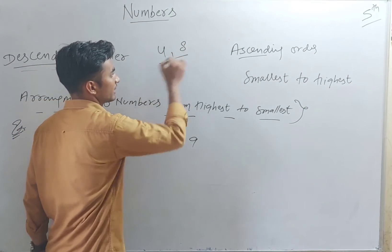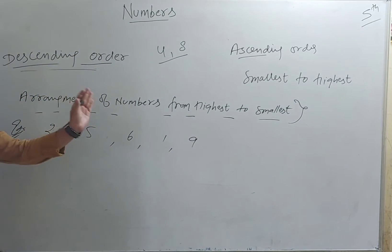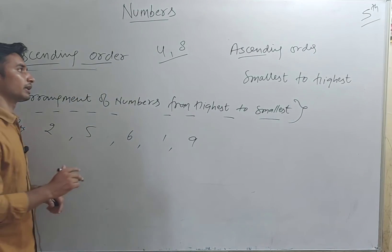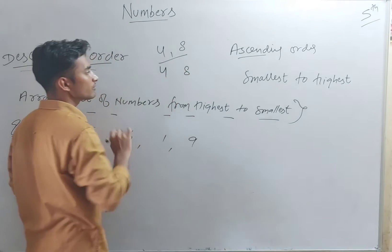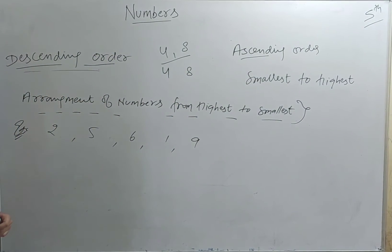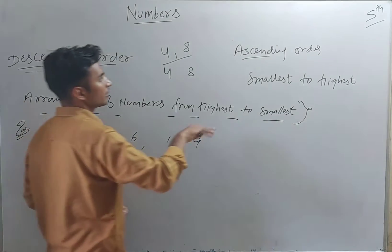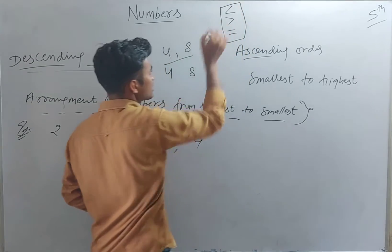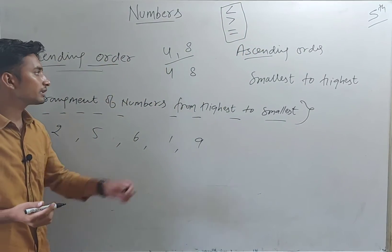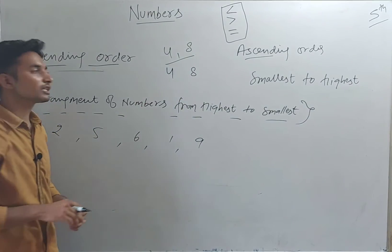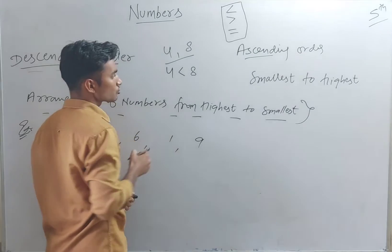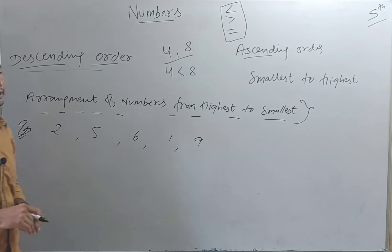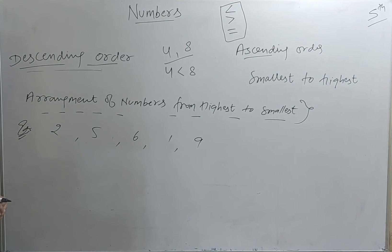Suppose we have two numbers: 4 and 8. To identify which is higher and which is smaller, we have to compare them. We have three signs: less than, greater than, and equal to. These three signs are used to create a relation. Between 4 and 8, the relation is: 4 is less than 8. So 4 is less than 8 — that is the relation between them.